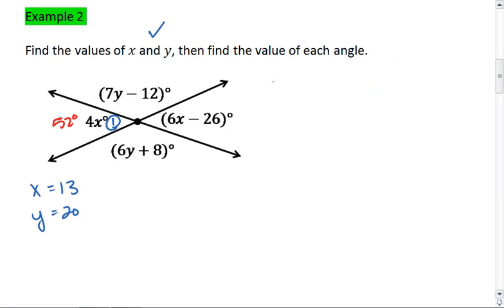Notice what I can do. If angle 1 is 52 degrees, then its vertical angle is also 52 degrees. Also, if angle 1 is 52 degrees, then its supplementary angle has to be 180 minus 52, which is 128 degrees, which also tells us that the bottom angle is 128 degrees.